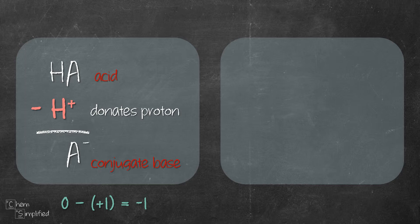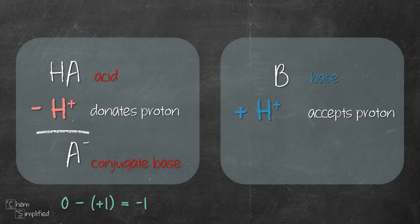Let's do the same for our base B. Since B is a base, it accepts proton, which means we'll need to add a H+. Then we do the math. Nothing plus H, we still have 1 H. B plus nothing, we still have B.